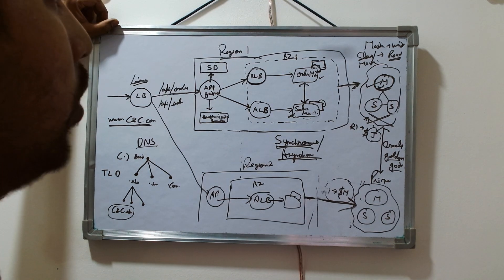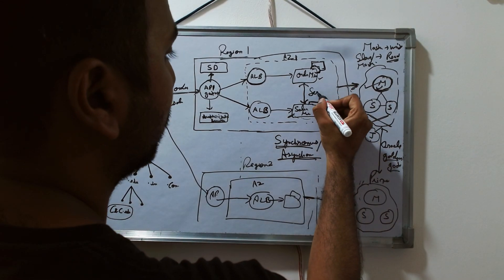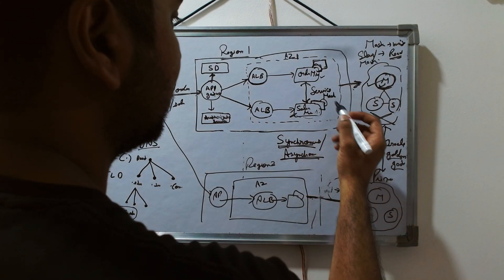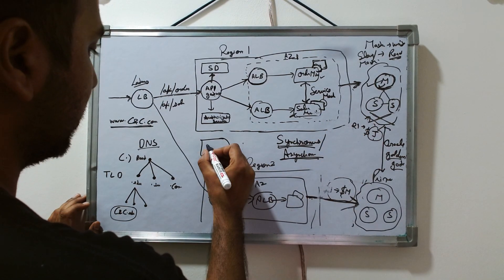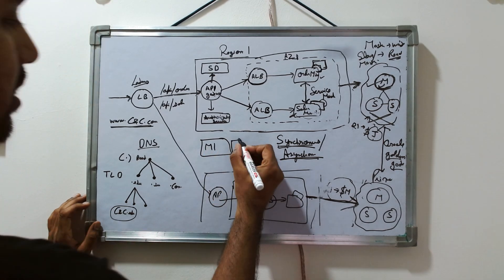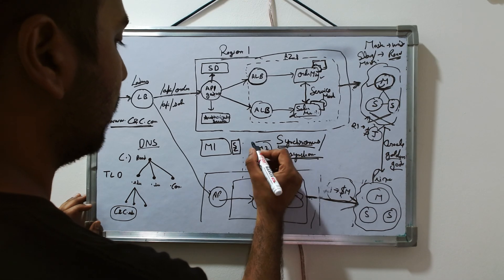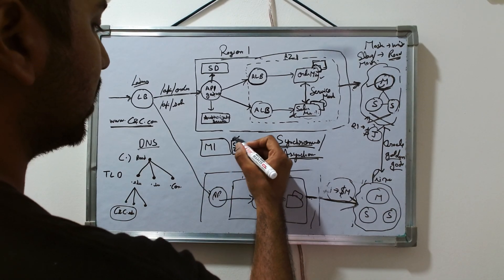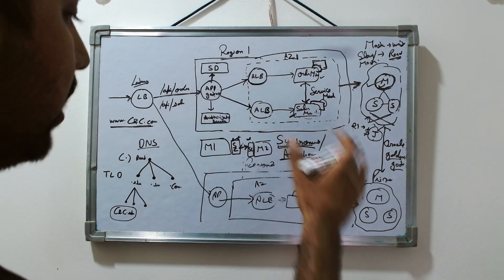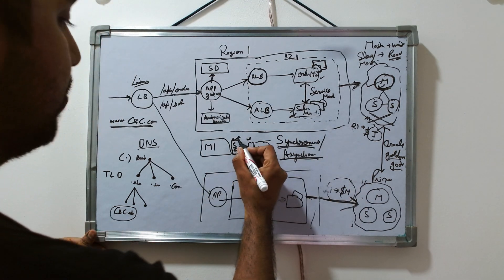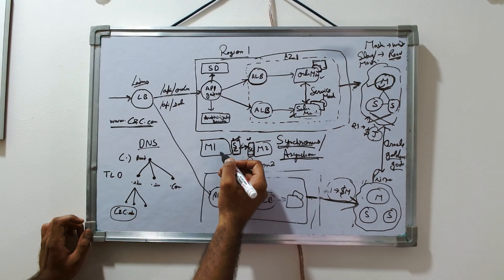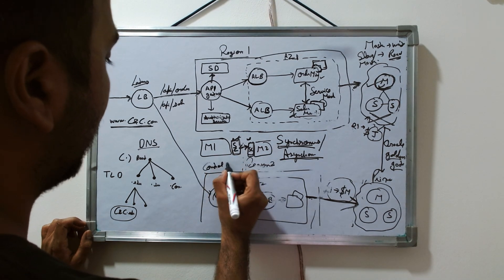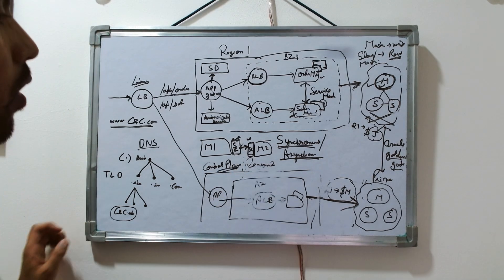The recommended approach for handling synchronous communication is to use a service mesh. In a service mesh, each microservice has a sidecar proxy attached to it. These sidecars communicate directly with each other and contain all the logic for load balancing, circuit breaking, retry, and authentication — keeping the microservice itself focused purely on business logic. The sidecars are configured through the control plane.